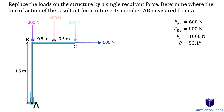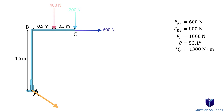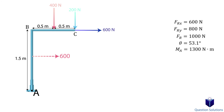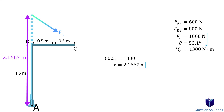Now we look at the moments created by the forces about point A. The first 200-newton force won't create a moment since its line of action intersects point A. The rest of the forces create moments; assuming clockwise to be positive, we find the resultant moment. Since the y-component of the resultant force passes through the vertical line of member AB, we can ignore it. We assume the placement distance is x, so the moment created is 600 times x, set equal to the resultant moment. Placing the resultant force at that location accounts for the resultant moment as well — replacing all the forces with this single resultant force.